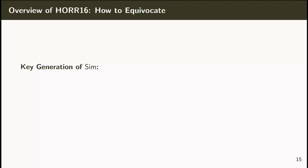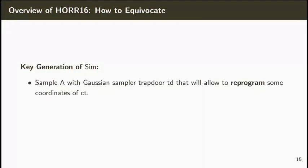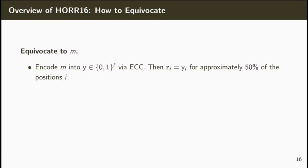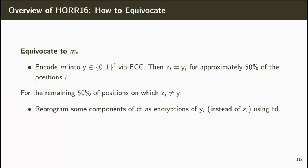To generate a public key in the ideal mode, the simulator starts by sampling a matrix A together with a Gaussian sampler trapdoor. This trapdoor will allow to equivocate some positions of the ciphertext. To simulate a ciphertext, the simulator simply encrypts a random string Z using the encryption algorithm. To open a message M, note that the encoding Y of M and the encrypted string Z agree on approximately 50% of the positions. For the remaining ones, we will be able to use the Gaussian sampler trapdoor to reprogram some of the components of the ciphertexts as encryptions of YI instead of ZI. This allows us to obtain the right statistics over the encryption random coins for message M.